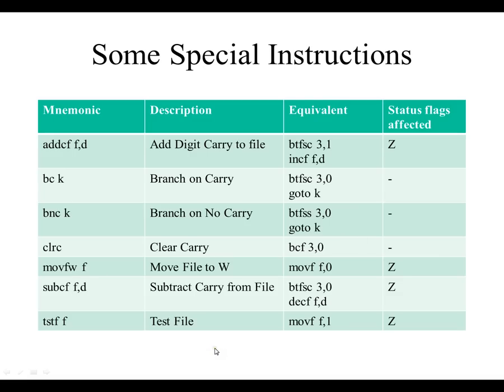Here's just some of the special instructions. This is not an exhaustive list. This is just some of them. But for example, this mnemonic add CFFD, add digit carry to file. So this equivalent, it's kind of like a macro, but they're predefined, I guess you could say. This will implement the following two commands only in one line. So it's simpler. So branch on carry to K. So a bit is equivalent to bit test F, skip and clear 3 comma 0. So that, the 3 just represents the status register and the 0 just represents the carry location. So, and then if that's true, then it's going to skip. So it's going to branch on the carry. And then you have branch on no carry. You have clear carry.